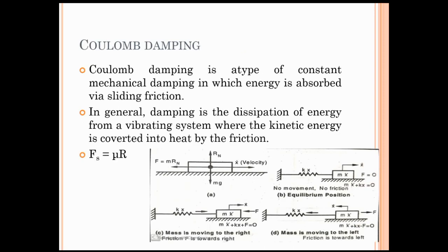Next is Coulomb damping. Coulomb damping is a type of constant mechanical damping in which energy is absorbed via sliding friction. In general, damping is the dissipation of energy from a vibrating system where kinetic energy is converted into heat by friction.